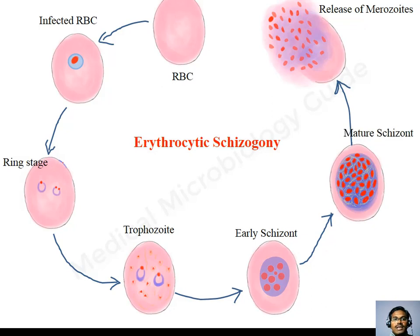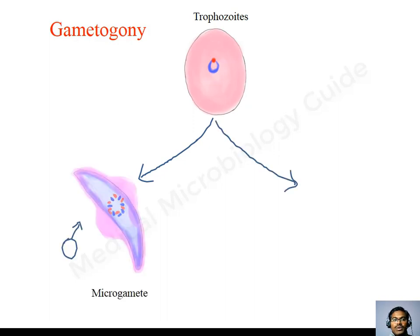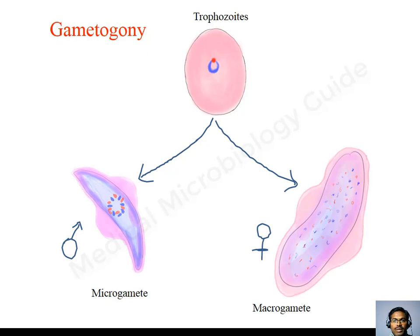The RBC filled with merozoites will break down to release the merozoites into the circulation. Again, these merozoites will go and infect fresh RBCs to continue the erythrocytic schizogony of the life cycle. This erythrocytic schizogony will continue for 2 to 3 cycles, and some of the trophozoites get converted into micro and macro gametocytes. This is called gametogony. The process of formation of these gametocytes is little understood, and they will be found in the peripheral circulation.